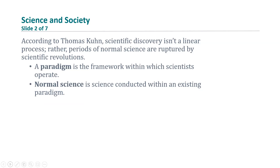According to Thomas Kuhn, normal science is the science conducted within an existing paradigm. During the practice of normal science, discoveries may be made that add to or clarify but do not challenge the existing paradigm. A paradigm is the framework within which scientists operate. There are paradigms for branches of scientific research, and in each scientific field, scientists adhere to a particular set of paradigms to guide their research.